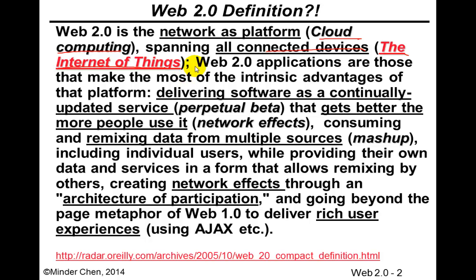Web 2.0 applications really take advantage of what's unique about the internet and the web as a means for delivering applications. The delivery of software applications is web-based, which means we can continuously and easily update the software. This is the term we call perpetual beta.